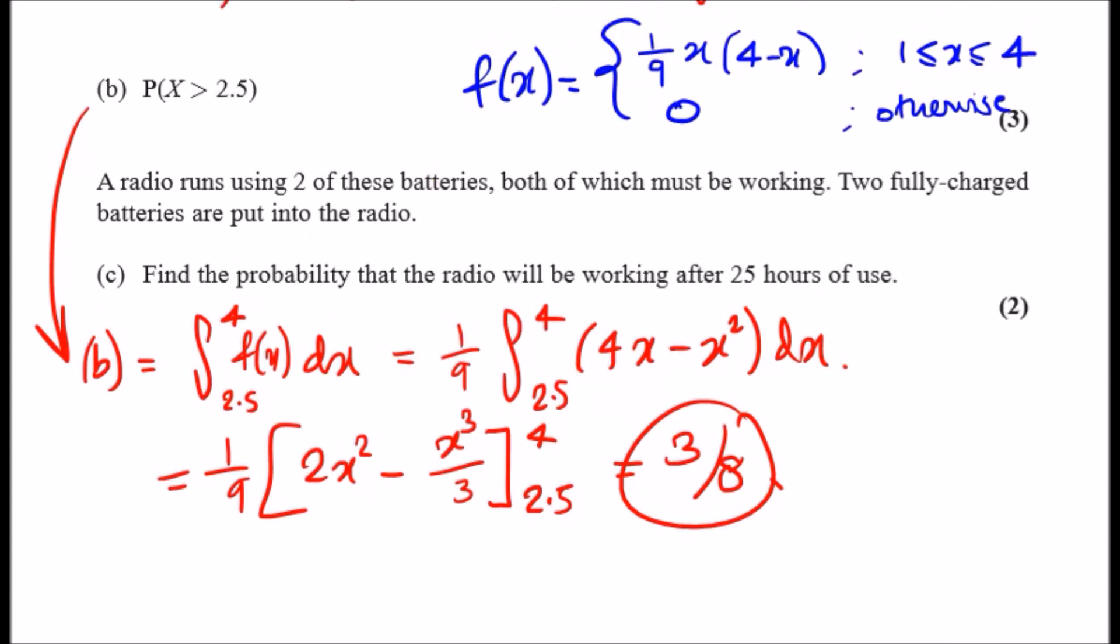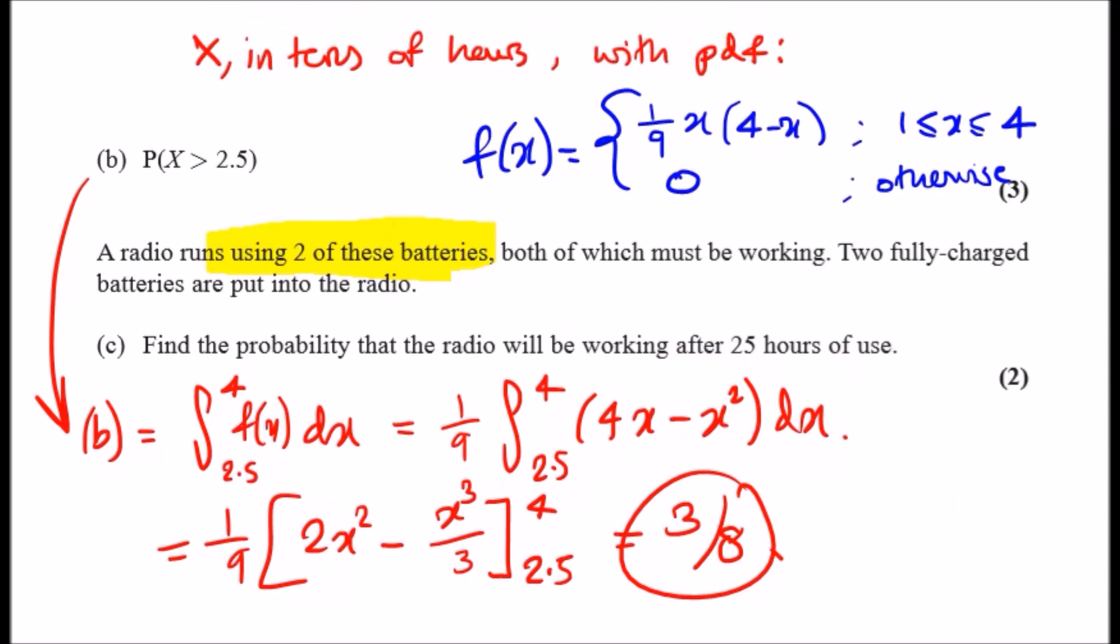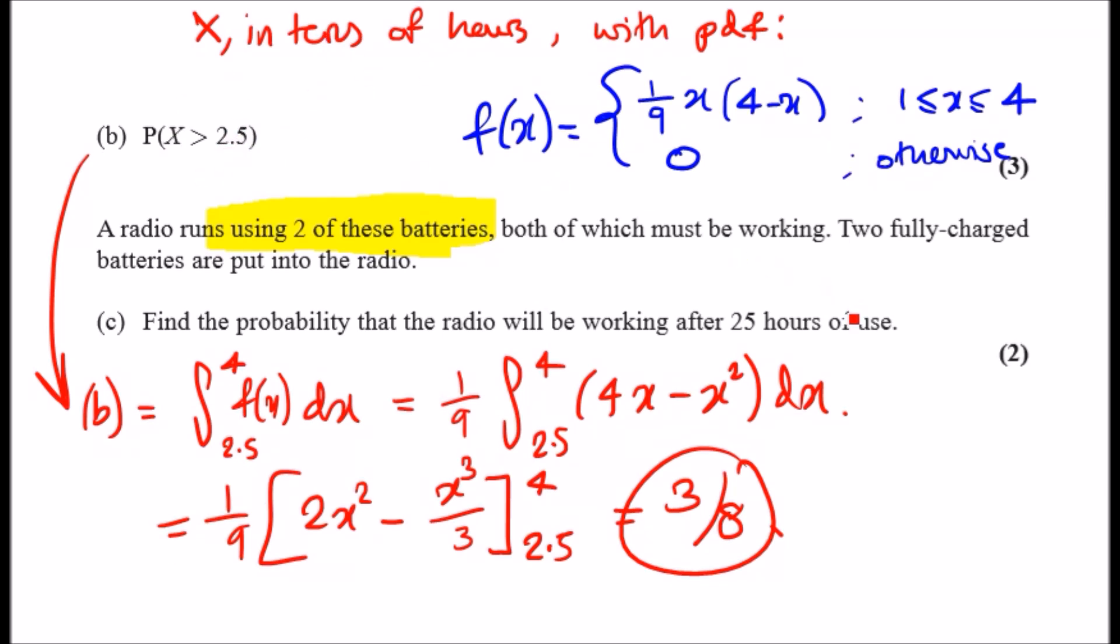Here we have a radio that runs using two of these batteries, both of which must be working. Two fully charged batteries are put into the radio. Part c: find the probability that the radio will be working after 25 hours use. When they say 25 hours, recall the random variable X is measured in tens of hours, so this probability from part b, X > 2.5, in reality is 25 hours. This statement is the same as X > 2.5.